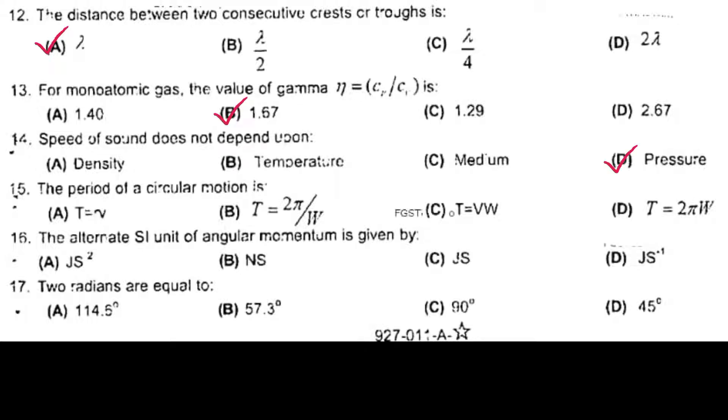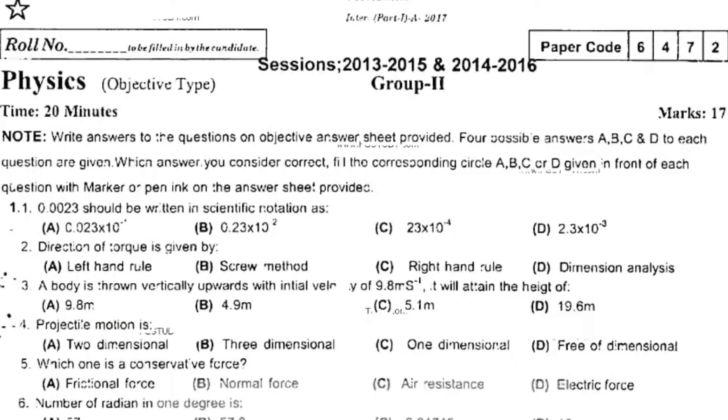The period of circular momentum is T = 2π/ω. The alternative SI unit of angular momentum is given by joule second. One radian equals 57.3 degrees. 0.0023 should be written in scientific notation as 2.3 × 10^-3. Direction of torque is given by right hand rule. A body is thrown vertically upward with initial velocity of 9.8 meter per second, it will attain the height of 4.9 meter. Projectile motion is two-dimensional.